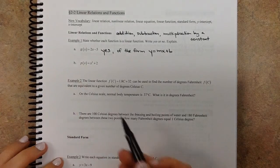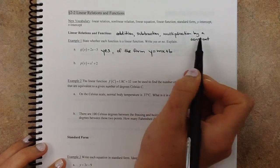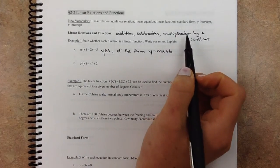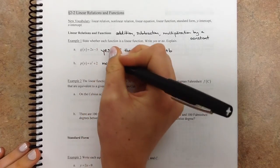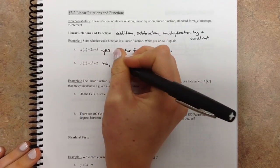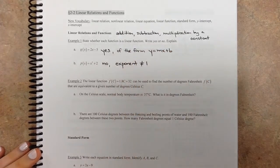So next one. x to the third power. That's like x times x times x. That's multiplication that's not allowed. It's multiplication by a variable instead of by a constant. So no, this is not linear.